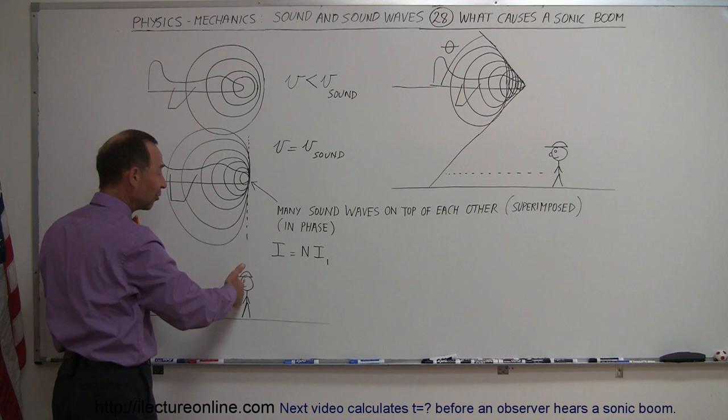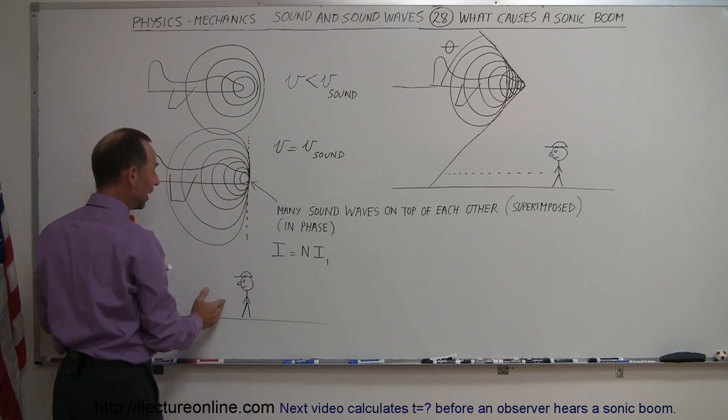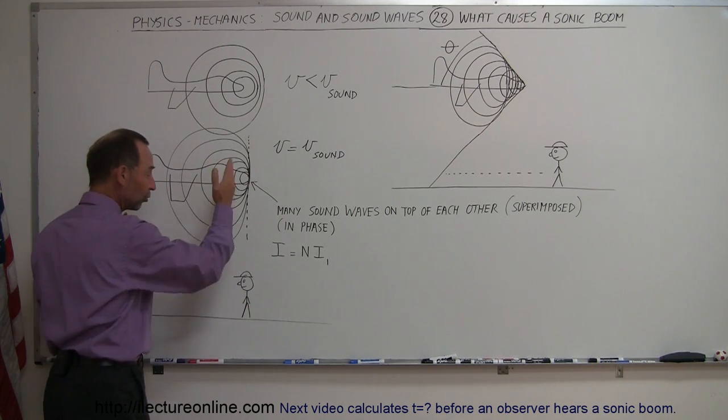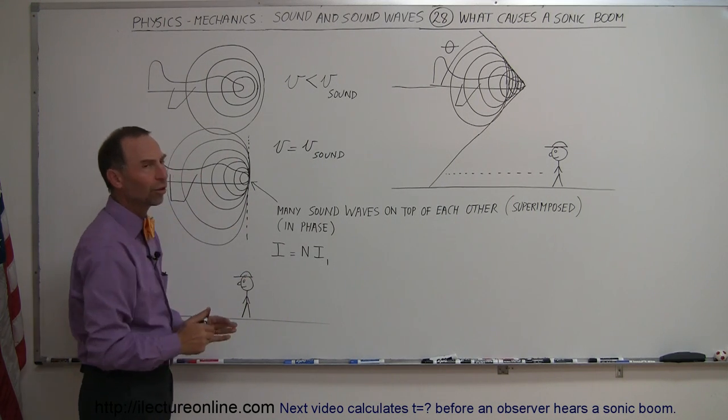Now typically we have this vertical sound wave that's being carried by this airplane that's moving at the speed of sound. And so a person standing on the ground below where the plane flies, as the plane goes overhead, immediately hears this enormous loud boom of all these wave sounds right on top of each other.